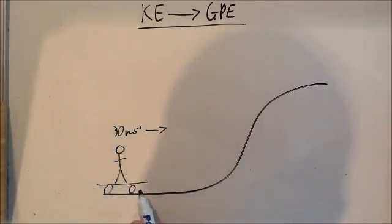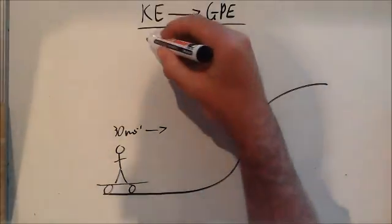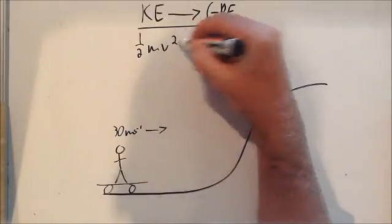He's got kinetic energy and we can't figure out exactly how much because we don't know his mass. The equation for kinetic energy is half mv squared.